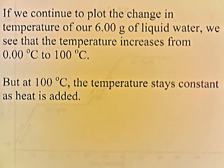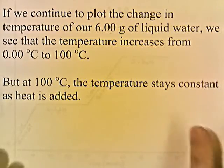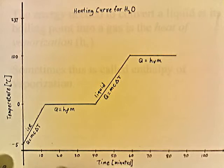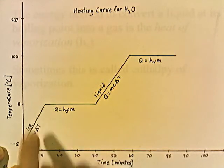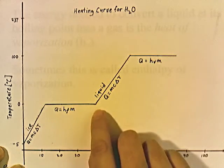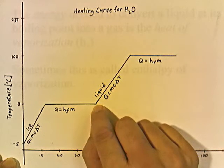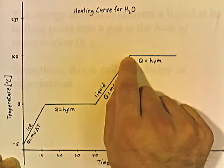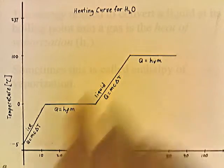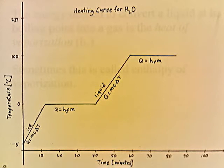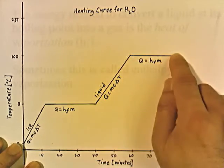Continuing to plot the heating curve, the temperature increases from 0 to 100 degrees. But at 100 degrees, the temperature stays constant as heat is added — you've reached the boiling point. When the temperature of the liquid remains constant in spite of the addition of heat, the added heat converts liquid water into steam or vapor. Similarly, when the temperature stays constant at 0 degrees on the curve, that indicates the melting point.